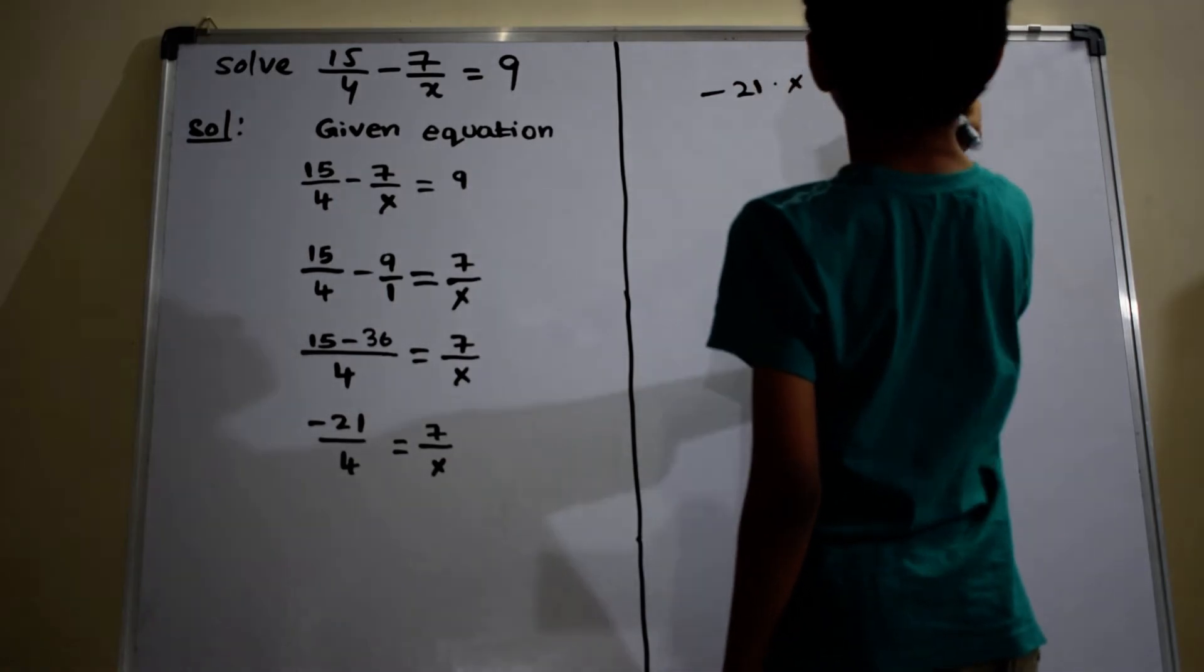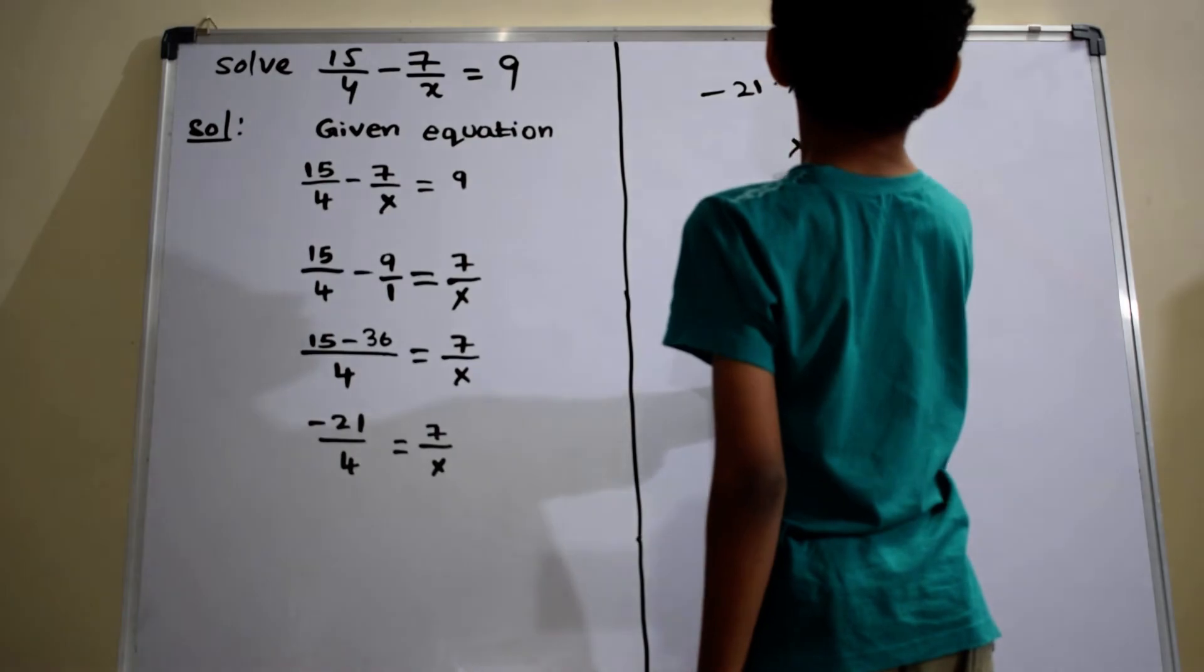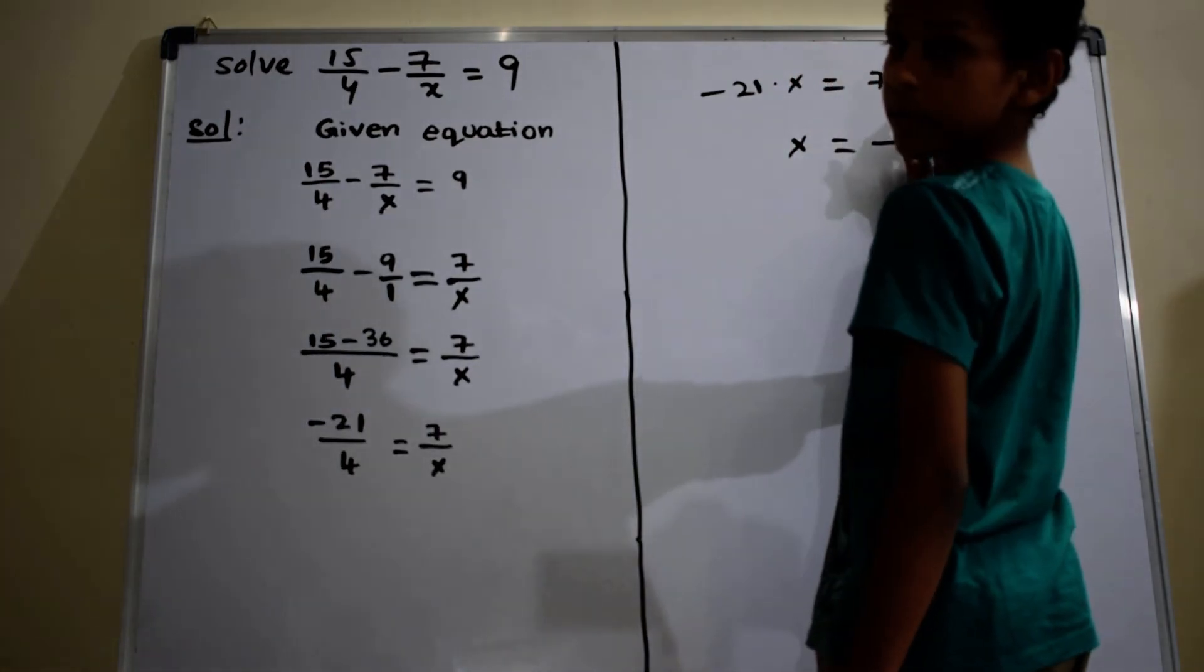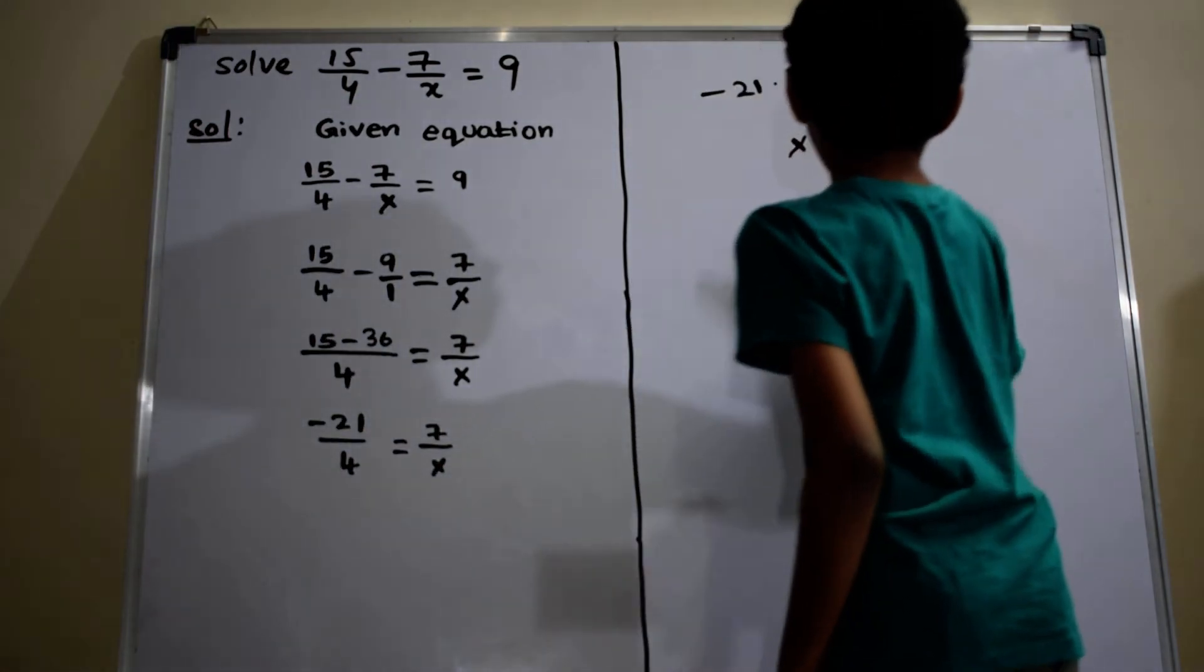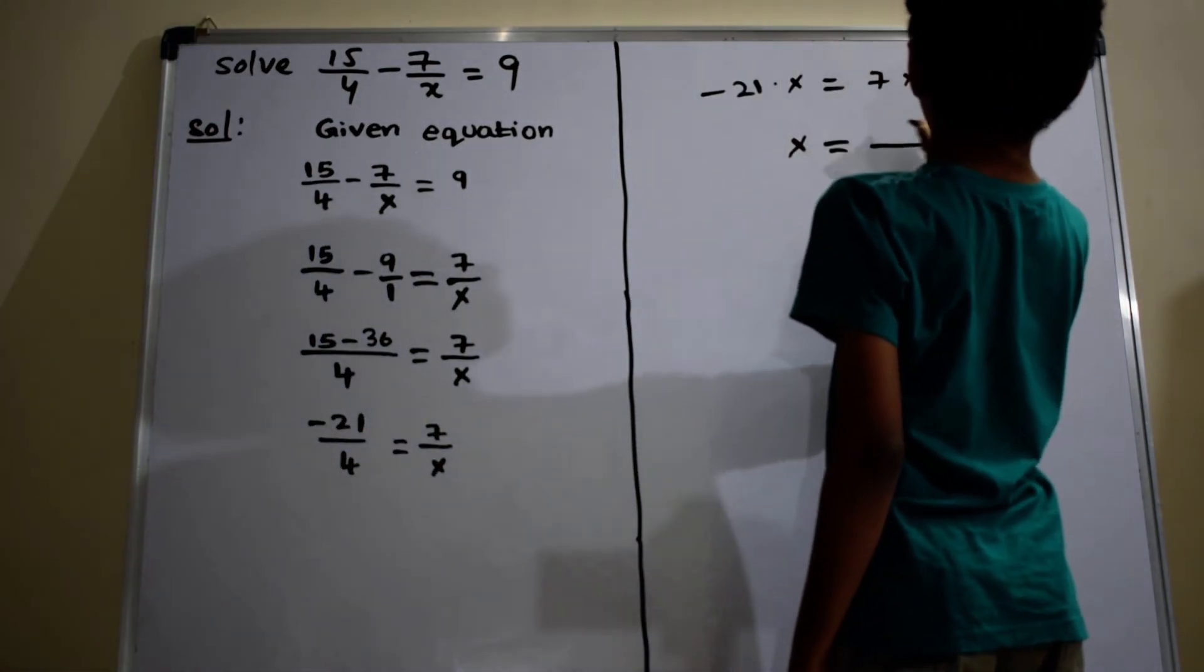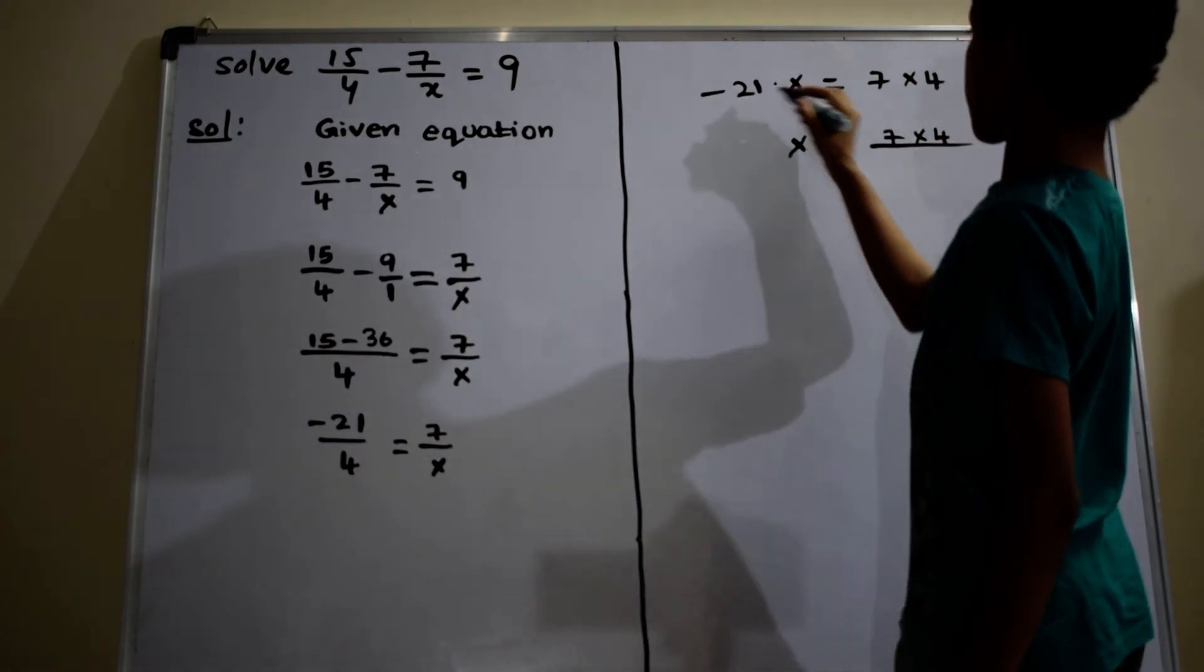7 into 4. x equals to 7 into 4 by minus 21.